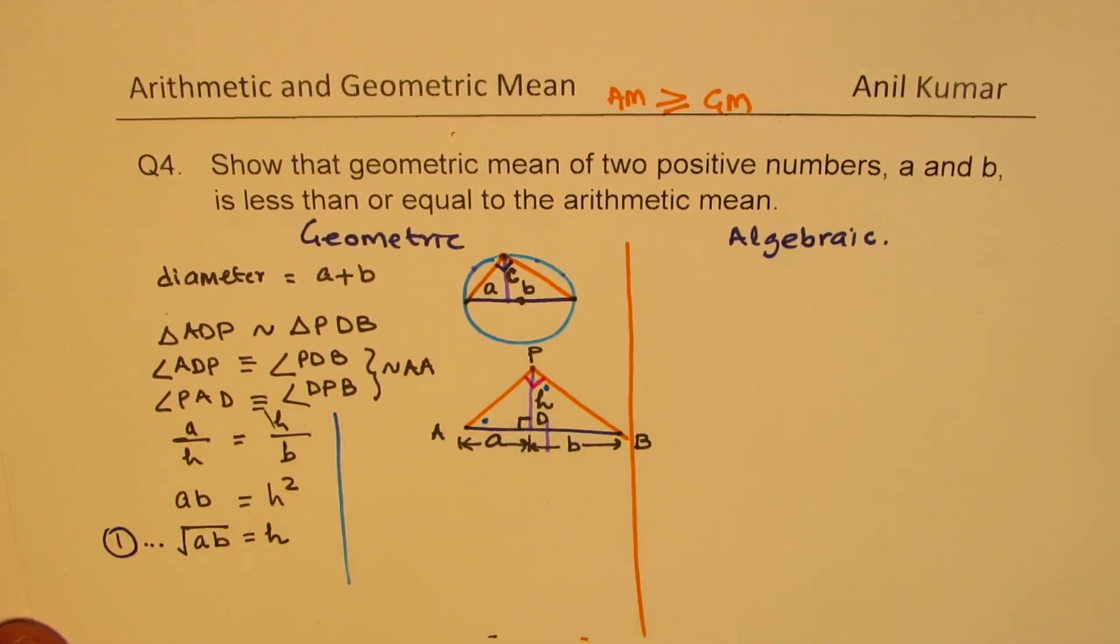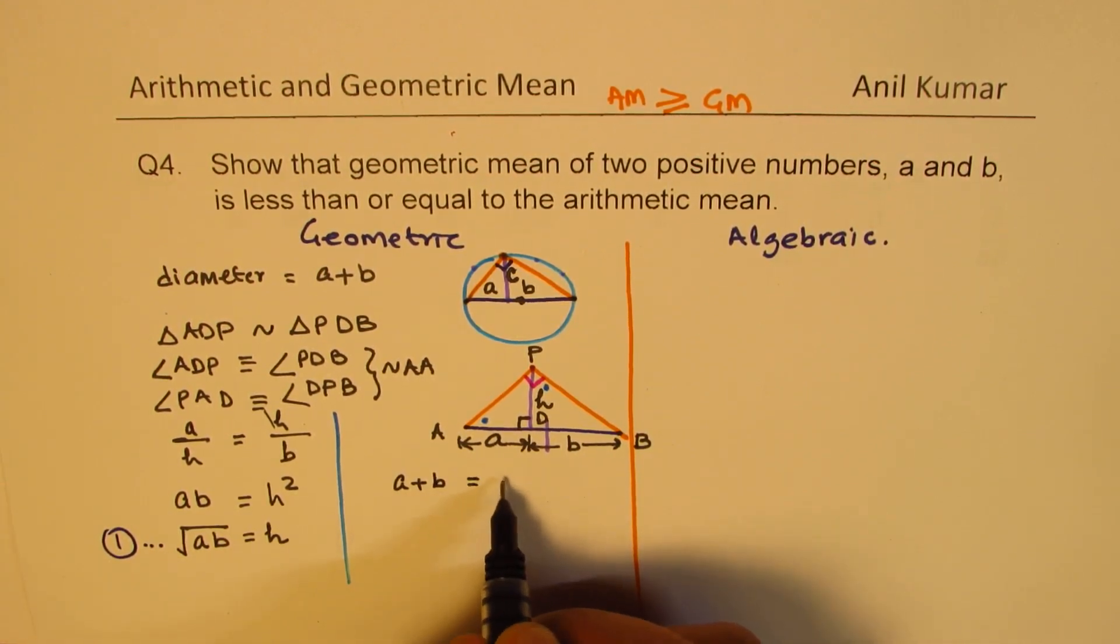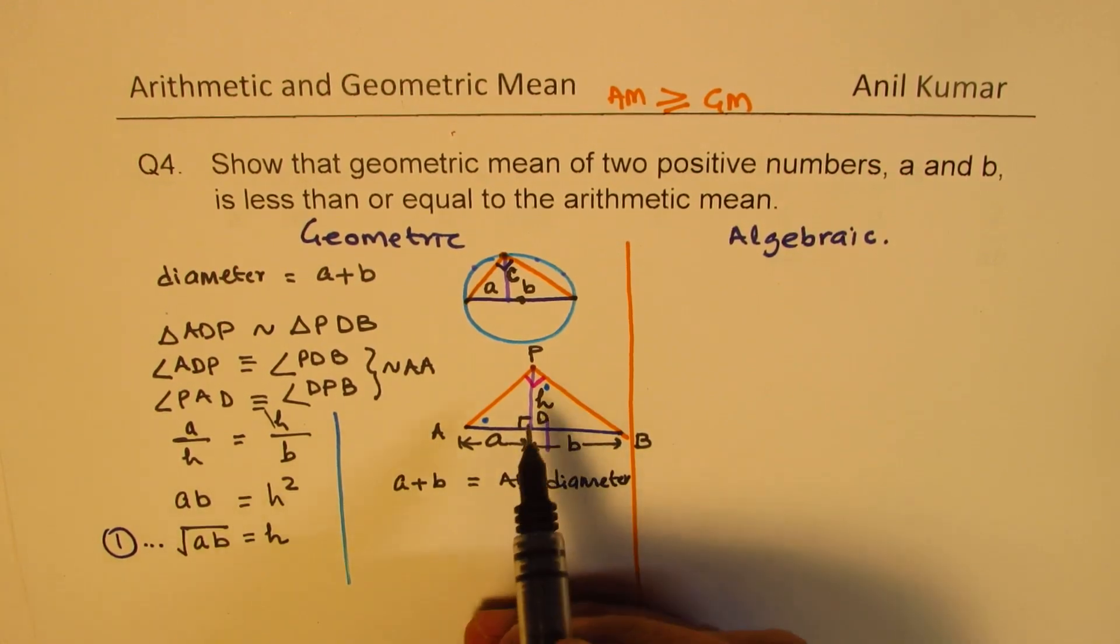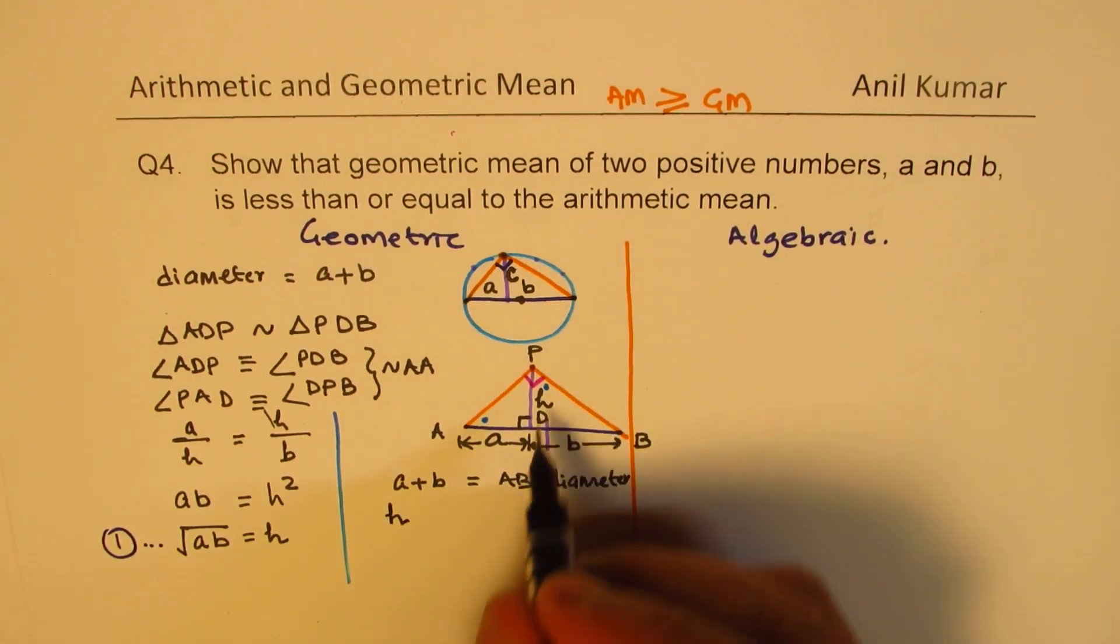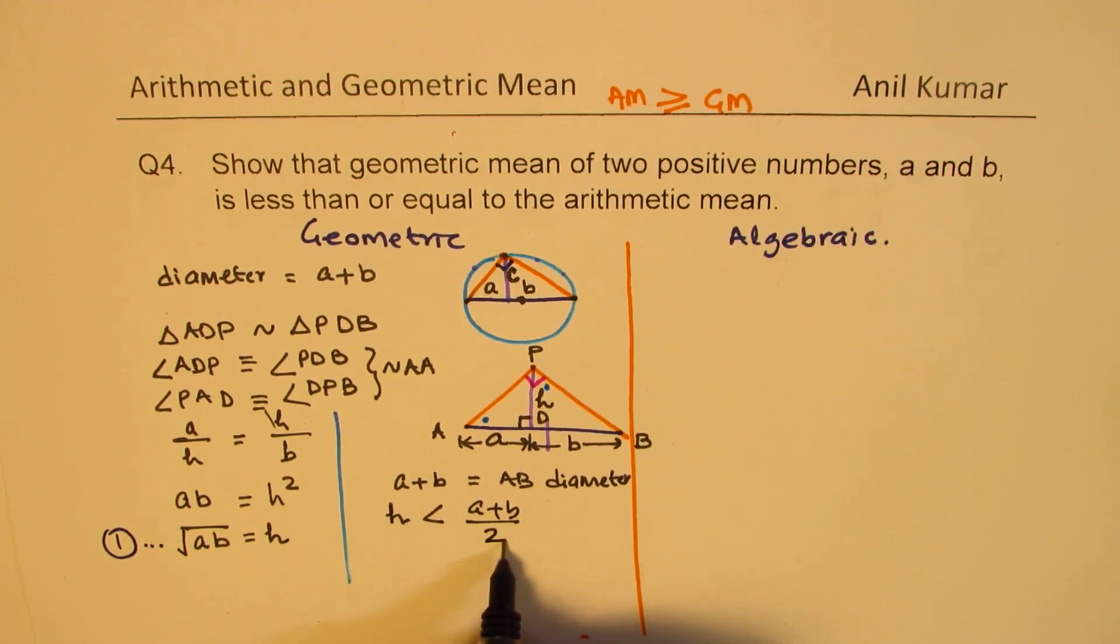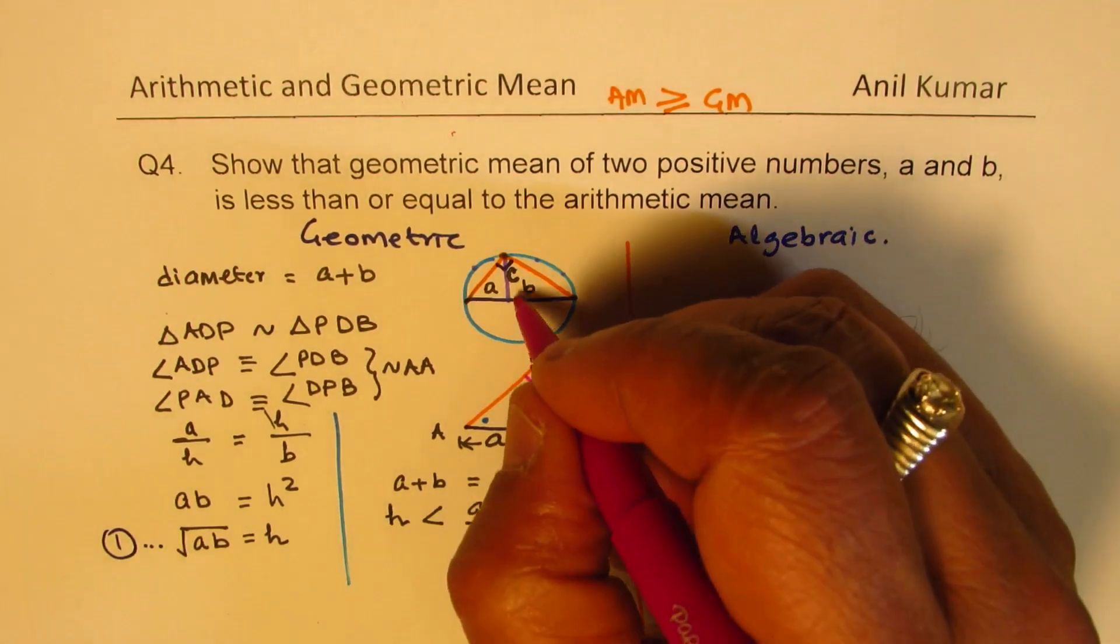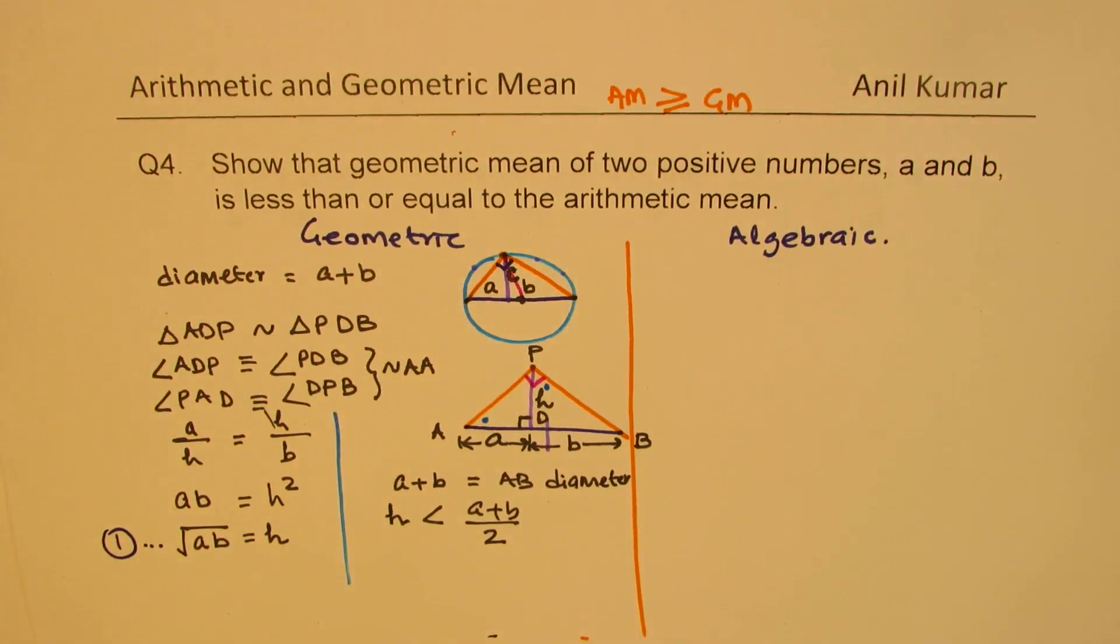The other condition which we have here is that A plus B is equal to diameter AB, the diameter. And from this given figure, you can see that H is less than A plus B divided by 2, because it is not the radius. Radius will be when you join the center, then you get the radius. So height is less than or it could be at the most equal to. If this happens to be right in the center, we could have height same as the radius.